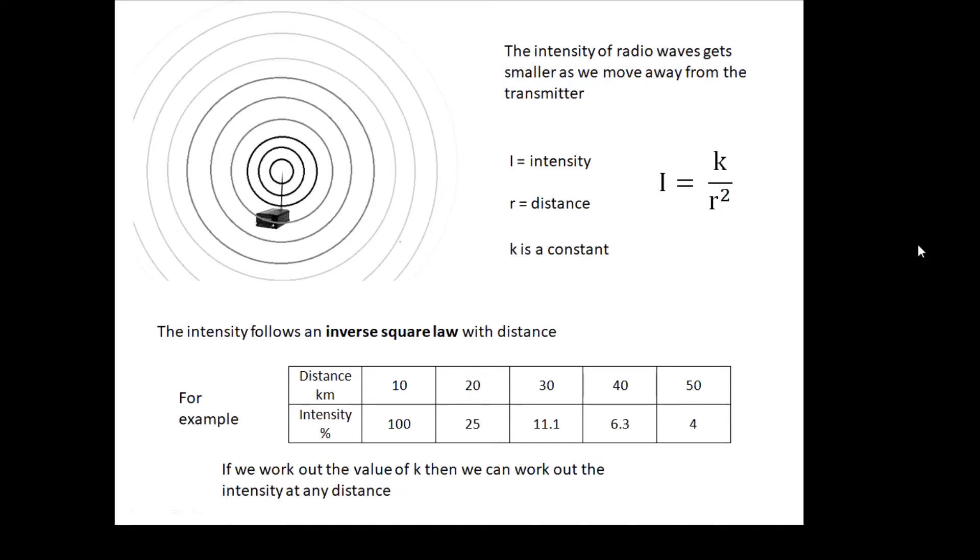Here's a radio transmitter. You see the waves coming out and they get weaker and weaker as you move further away because the waves spread out more. And we can use this equation here: I = k/r² to work out the intensity. Now notice that it's an inverse relationship. In other words, the intensity gets smaller and it follows what we call an inverse square law. Now basically that means that if you double the distance, is the intensity half as much? And the answer is no, it's a quarter.